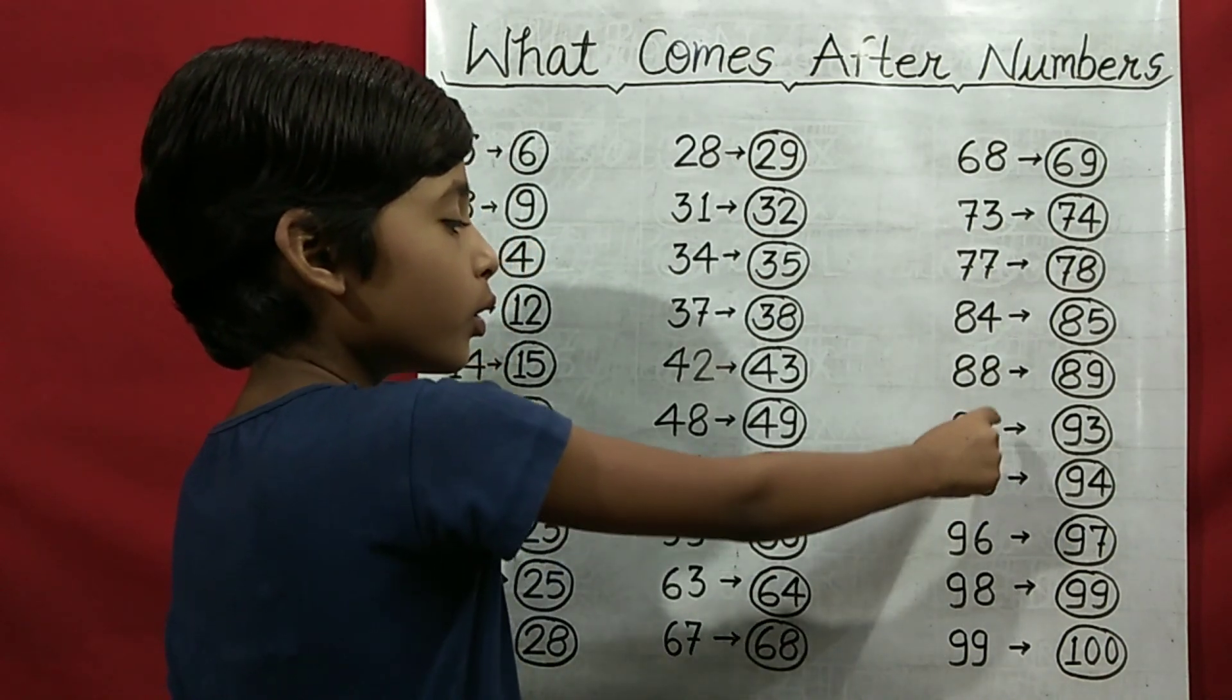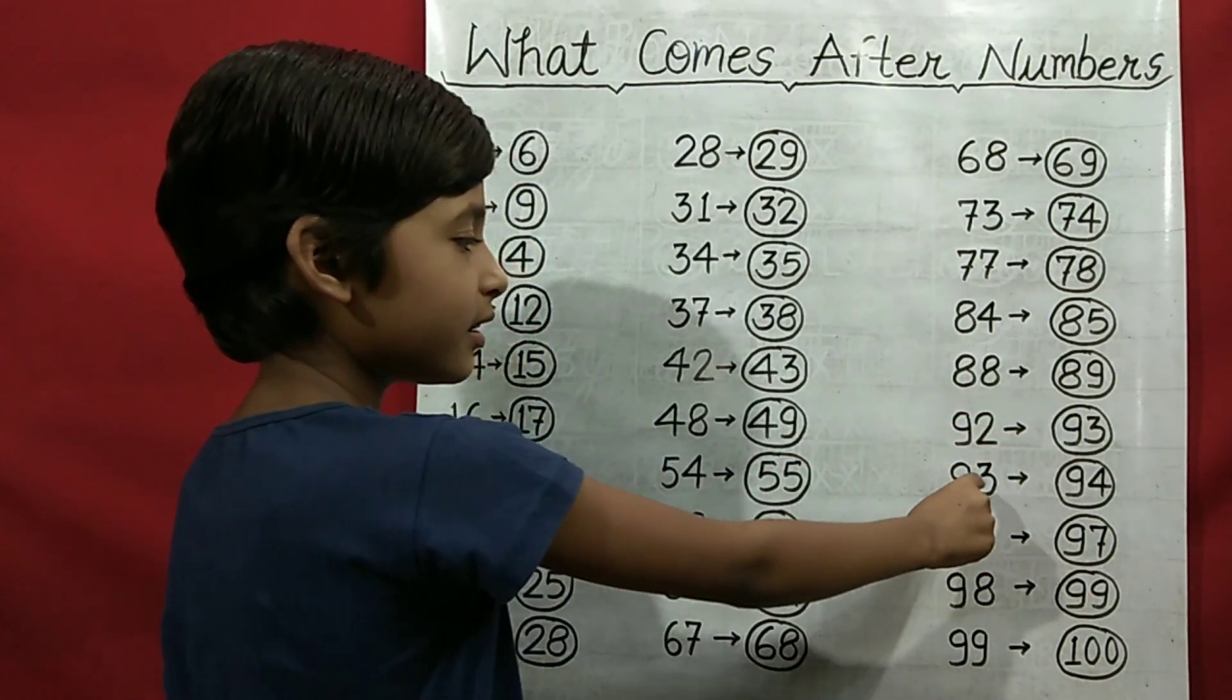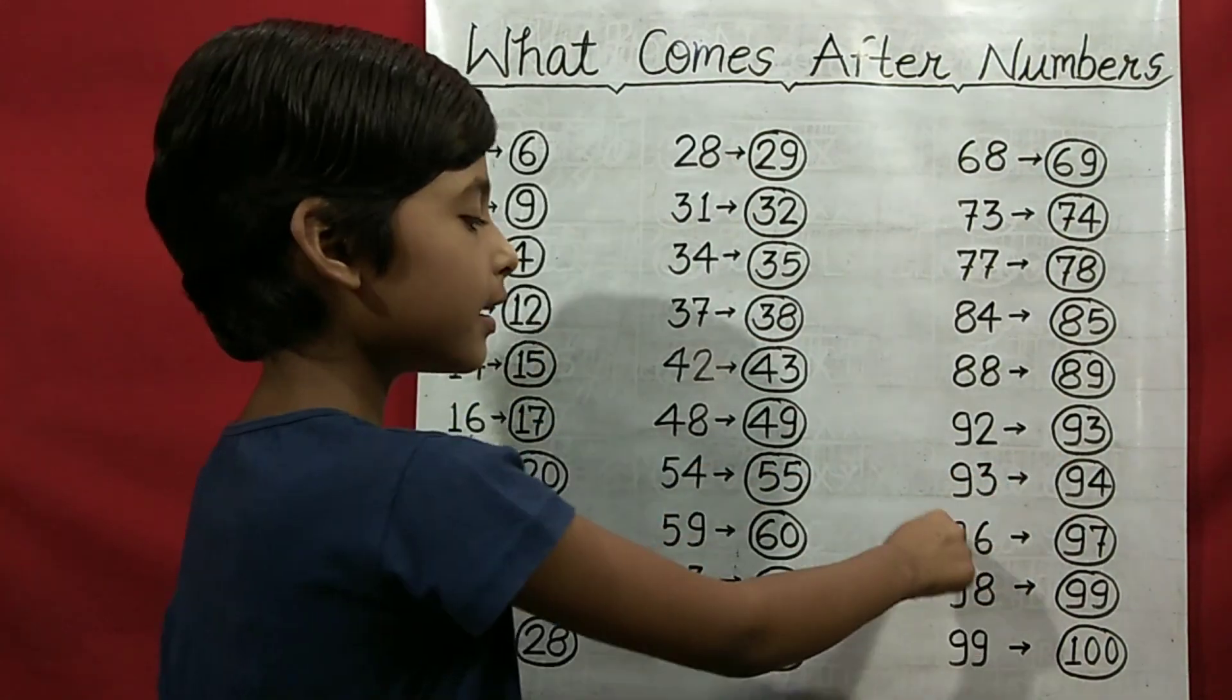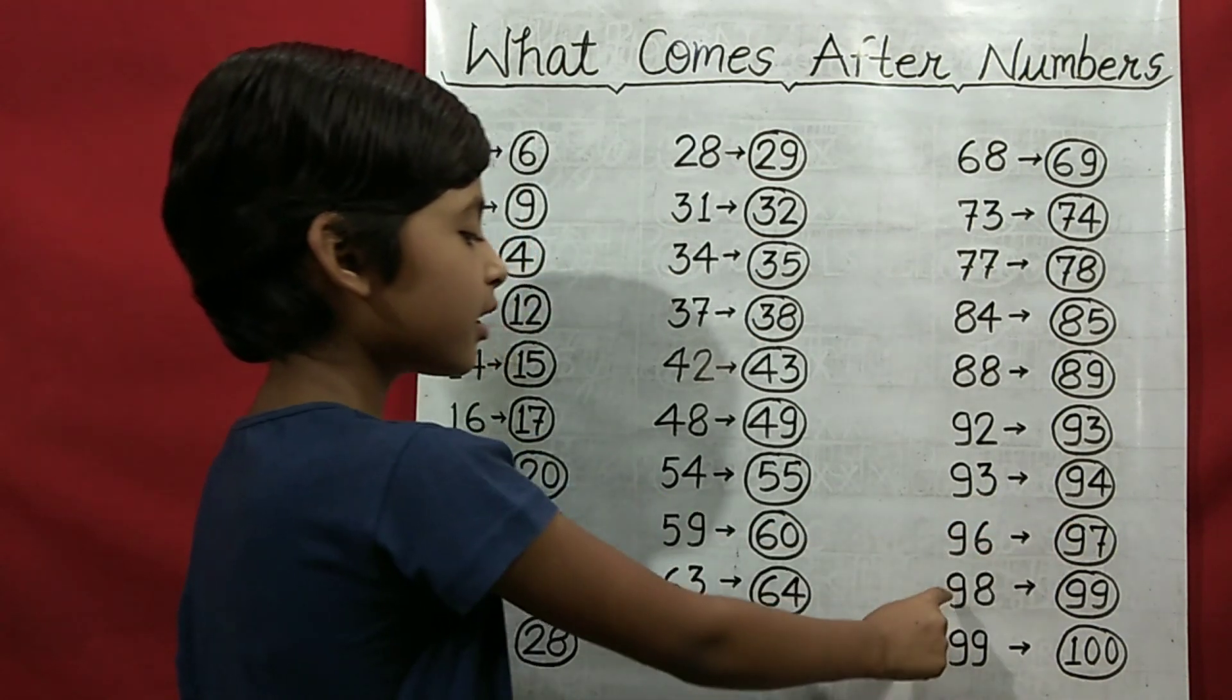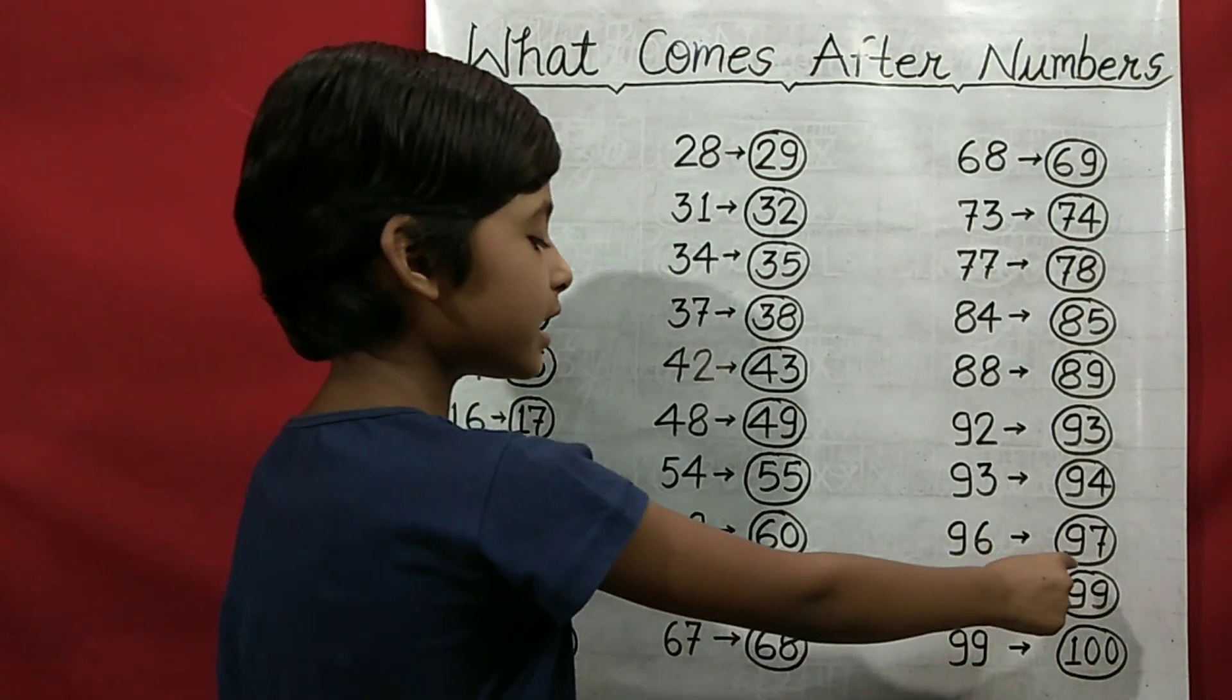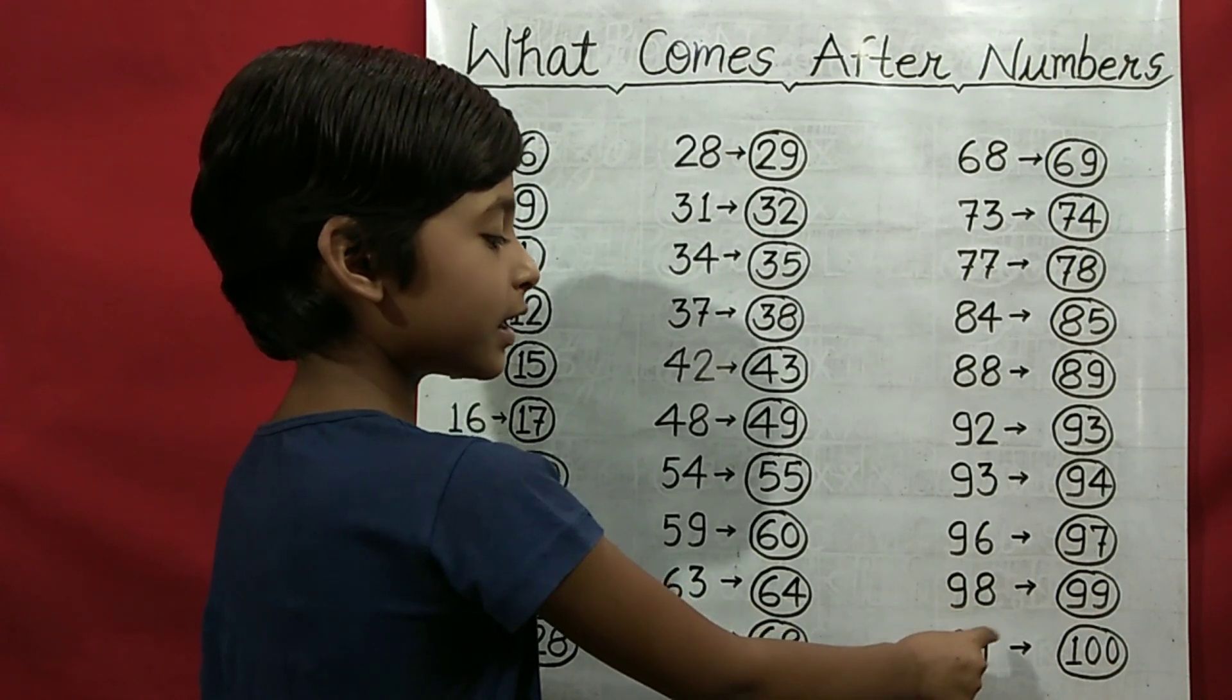92 comes after 93, 93 comes after 94, 96 comes after 97, 98 comes after 99, 99 comes after 100.